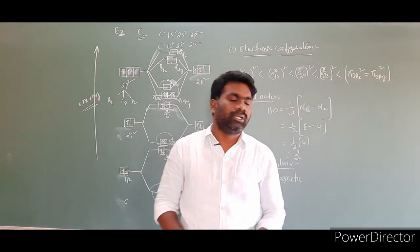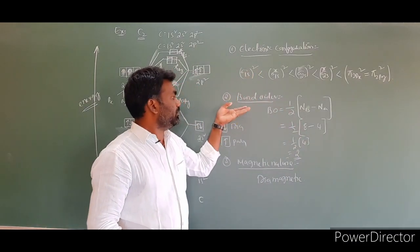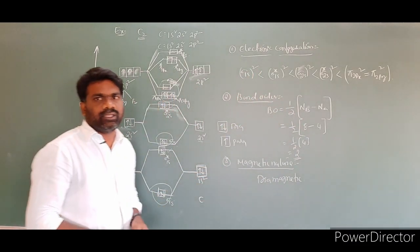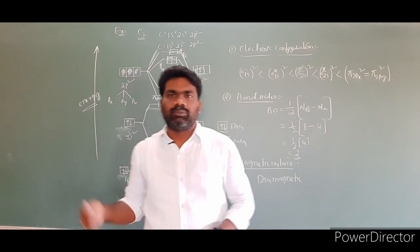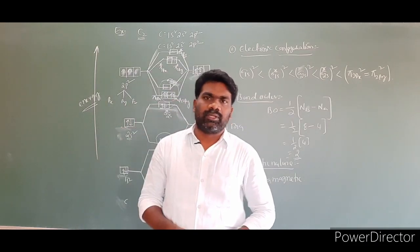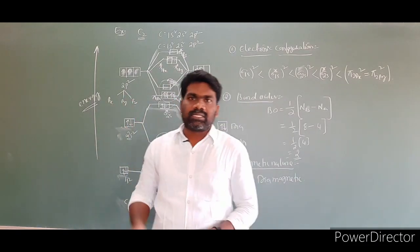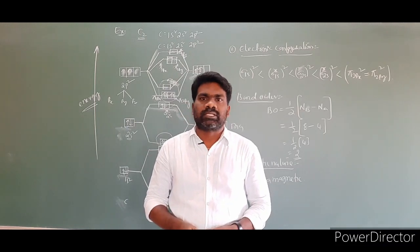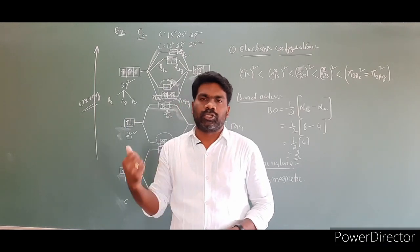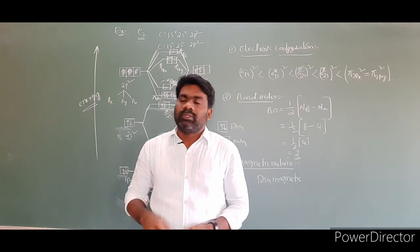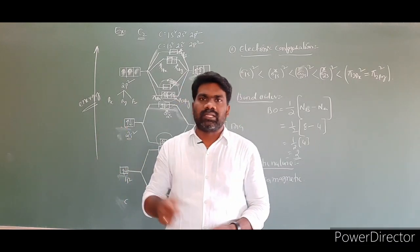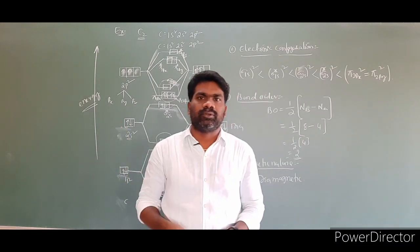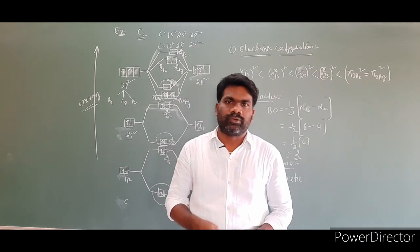So the electronic configuration, bond order, and magnetic nature are the three key outputs after constructing a molecular orbital energy level diagram for any diatomic molecule. In the next class, we will continue with the construction of molecular orbital energy level diagrams for molecules with greater than 14 electrons.